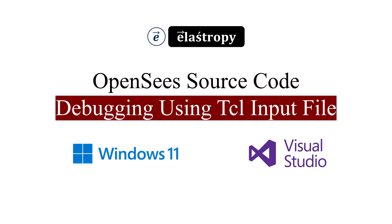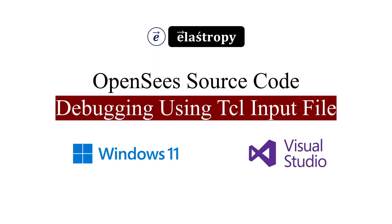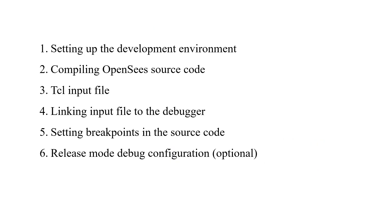Hi everyone, welcome to this video tutorial on debugging OpenSees source code using a TCL input file. In this tutorial you will learn in detail about every step involved in this debugging process. The steps are: first, set up the development environment — here the development environment is Visual Studio — and you have to download the OpenSees source code from the GitHub website, then compile it successfully.